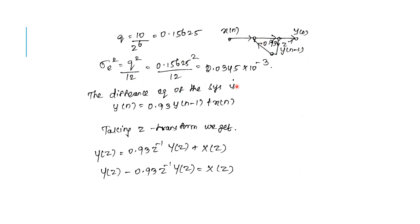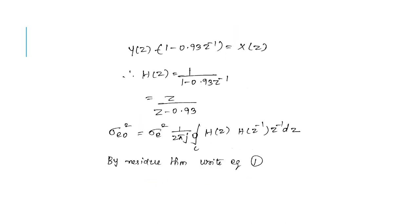From the diagram, the difference equation of the system is Y(n) equals 0.93 Y(n−1) plus X(n). Taking the Z-transform on both sides, we obtain the transfer function H(Z). To find the output steady state noise, we apply the formula sigma E0 squared equals sigma E squared times 1 over 2πj times the closed contour integral of H(Z) H(Z⁻¹) Z⁻¹ dZ. By the residue theorem, we evaluate this expression.